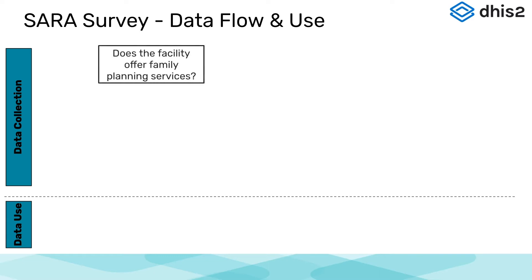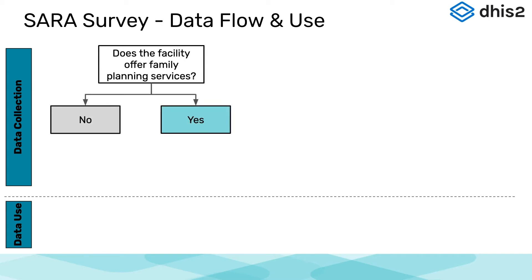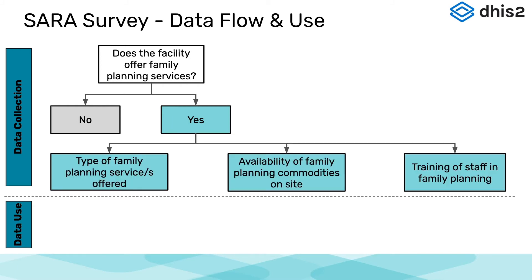An important question for understanding service availability and readiness is whether the facility offers family planning services. Given they do offer these services, the questionnaire will ask specific questions about these family planning services — for example, the type of family planning services offered, the availability of family planning commodities on site, and the training offered for staff related to family planning.